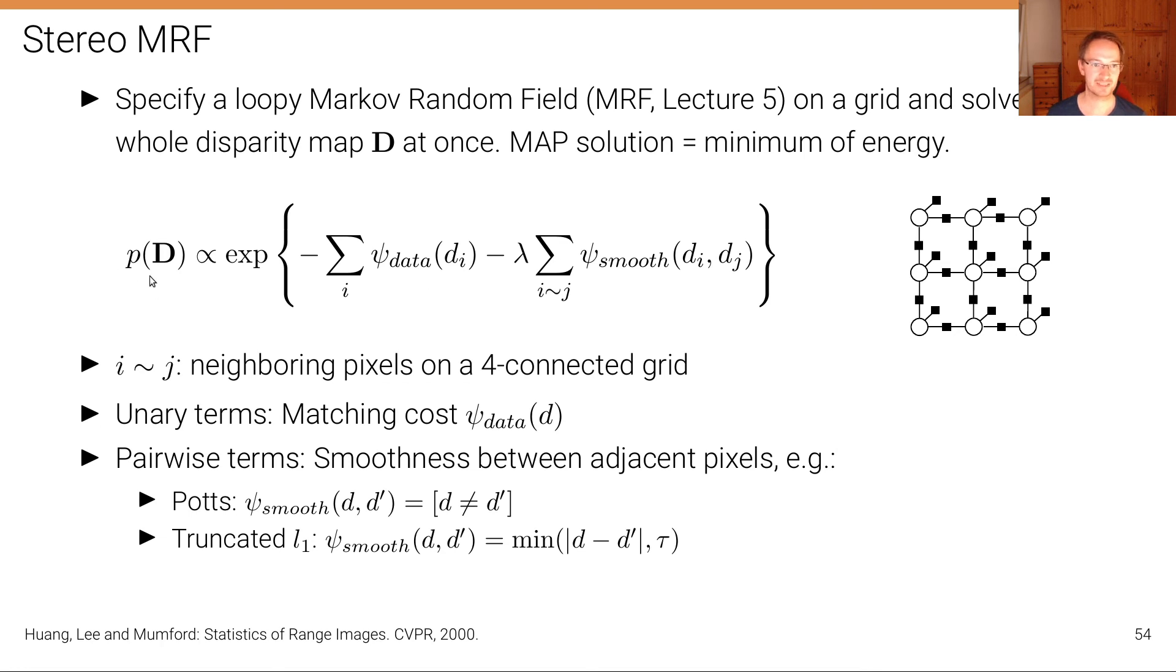Now this is what we had already. And if we would ignore that term and try to maximize this probability or minimize that energy, we would obtain the winner-takes-all solution because there would be no connections, no pairwise potentials, no pairwise terms. But what we are doing now is we are introducing constraints and in this case on a four-connected grid. Each of these variables that we want to estimate, we have one per pixel. And then we have connections between adjacent pixels here on this four-connected grid. So for each pixel, we have the top, the left, the right and the bottom neighbor. And for each of those, we have such a smoothness term here added that now depends not on a single variable, but on let's say this variable and the adjacent variable.